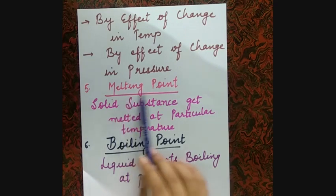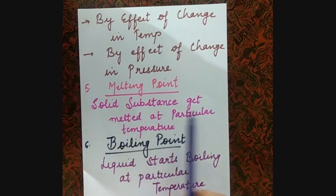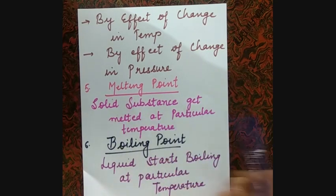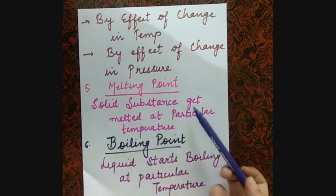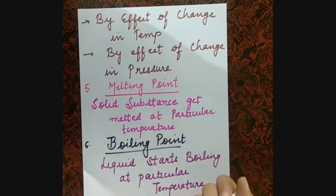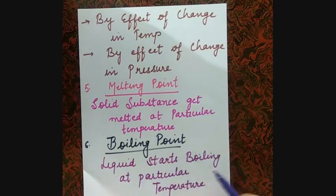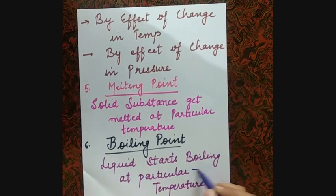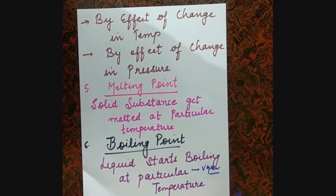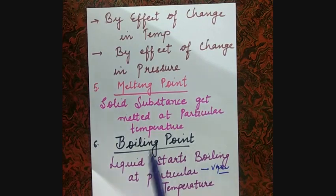Next is melting point. At melting point, a solid substance melts at a particular temperature — the temperature at which a solid melts into a liquid state is called the melting point. Then boiling point — when a liquid starts to boil at a particular temperature and vapors are formed, that is called the boiling point.